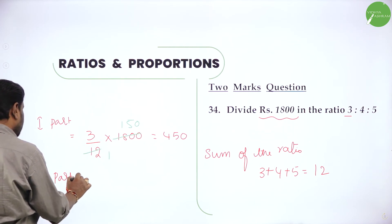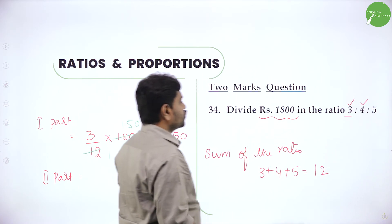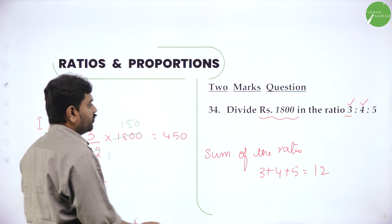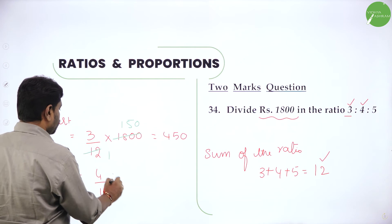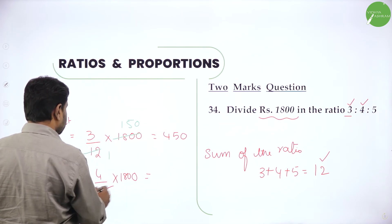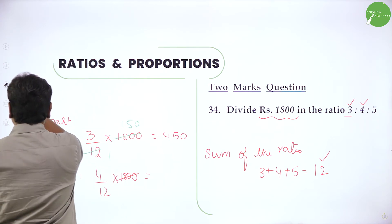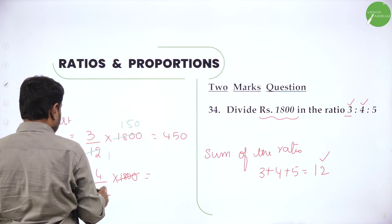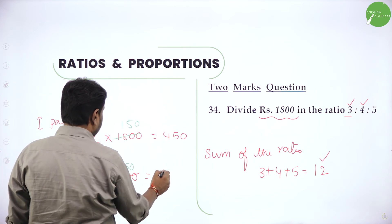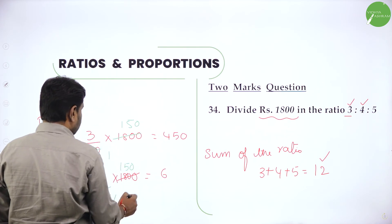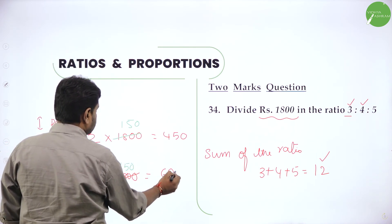Second part — the second value of the ratio is 4. So 4 divided by sum of the ratio 12, into 1,800. We already divided 1,800 by 12 to get 150. So multiply 150 into 4 — 15 into 4 is 60 — that will become 600 rupees.